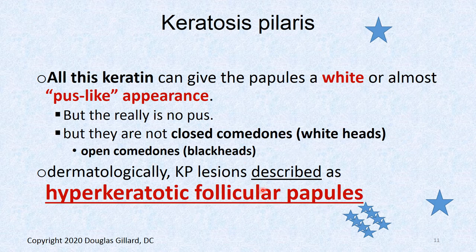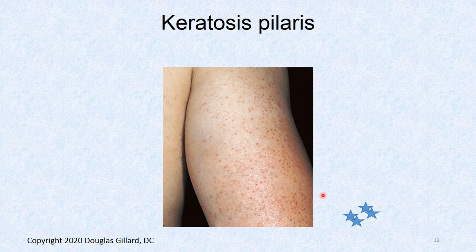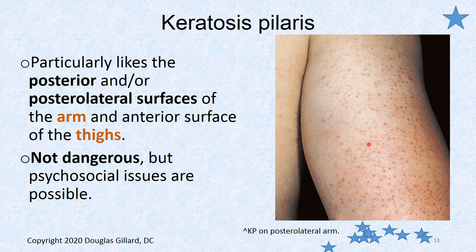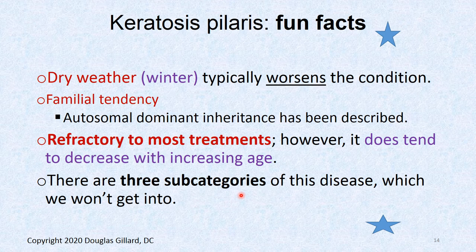The KP lesions are best described as hyperkeratotic — meaning there's too much keratin produced — follicular papules, which are little bumps made around the follicles. It particularly likes the posterior and posterolateral surface of the arm and the thighs. It can hit the anterior surface of the thigh. It's not a dangerous condition, with no effect on lifespan, though there are psychosocial issues. It usually doesn't hit the face, but it can in rare cases.